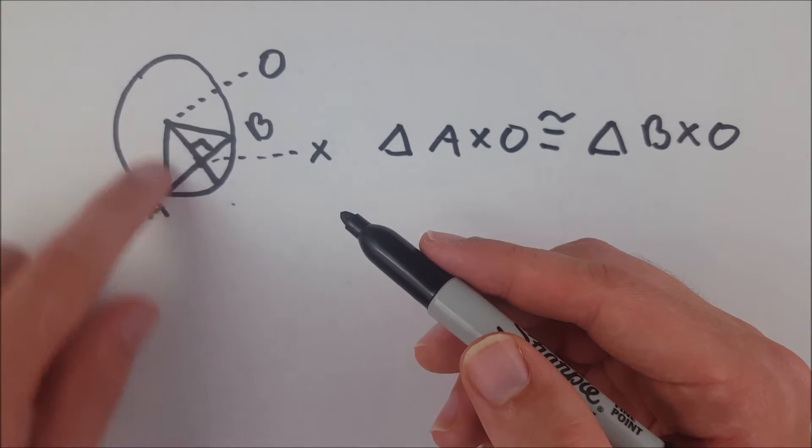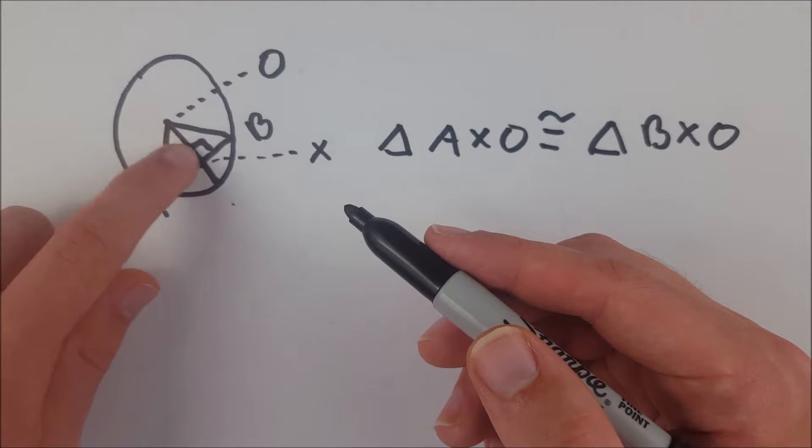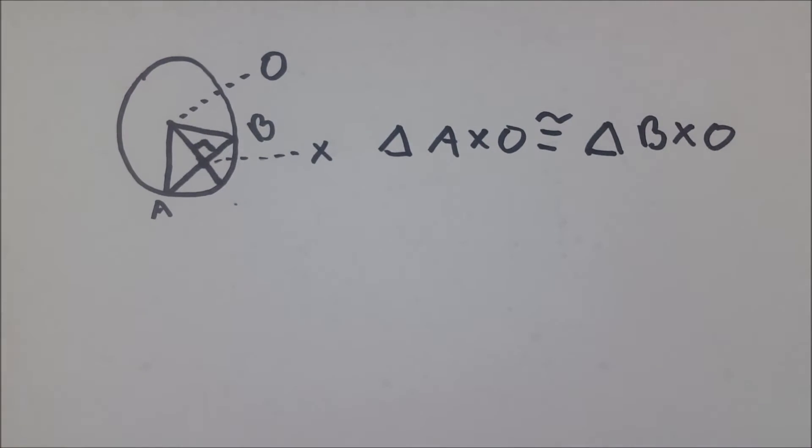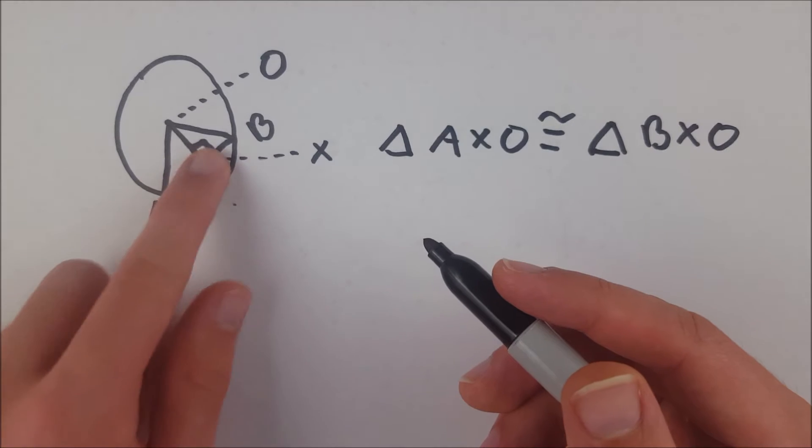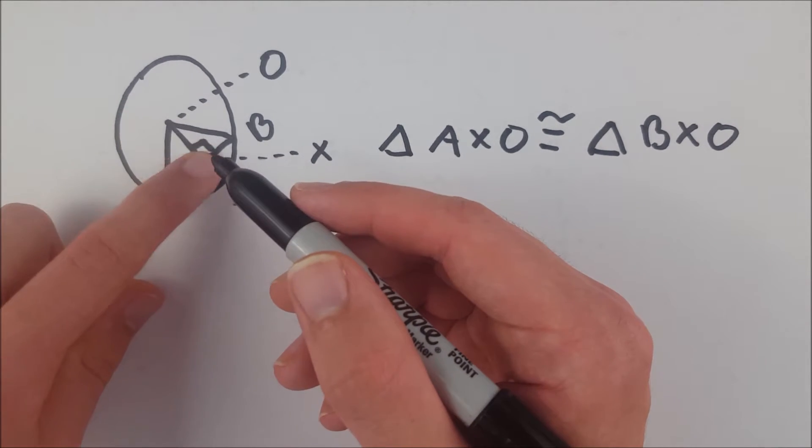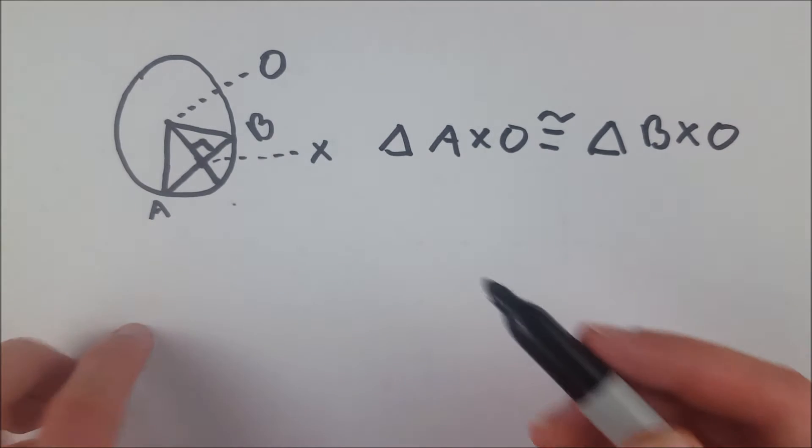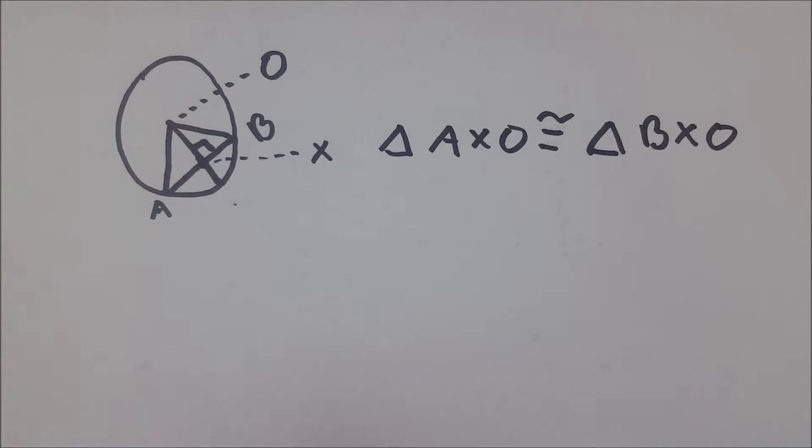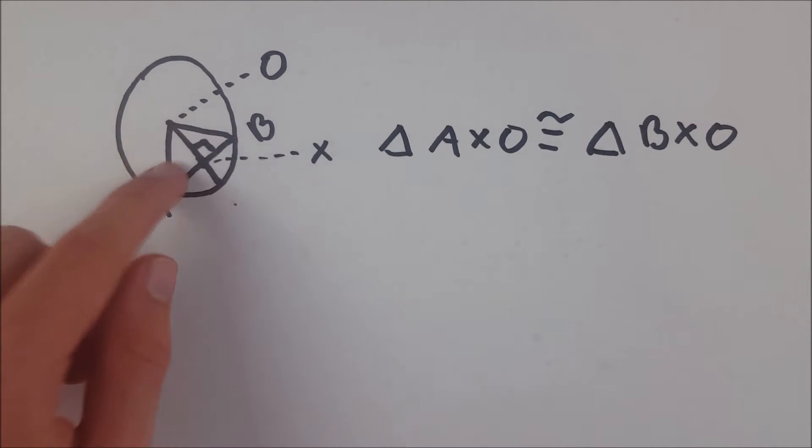And then we also know that this leg is congruent to itself because congruence is a reflexive property. And of course we know these are both right triangles because we assume that the radius was perpendicular to the chord. Therefore we can use hypotenuse leg to say that these two triangles are congruent.